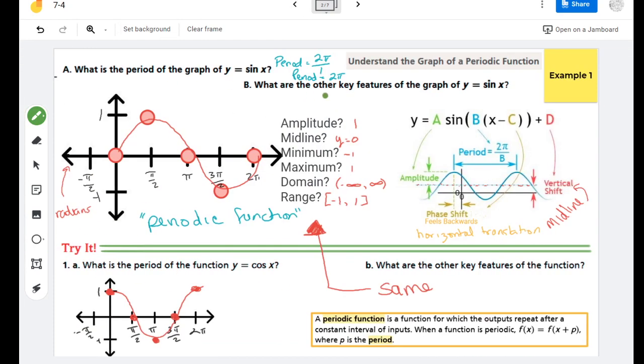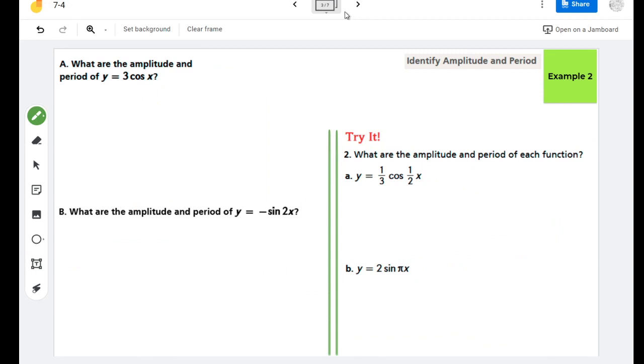So recall the amplitude is the distance from a midline to the top or the bottom of the graph. An amplitude is a physical distance, something that's measurable, so when we find an amplitude, we take the number that's being multiplied to our trig function, in this case it's 3, and I make sure to take the absolute value of it so that I always get a positive number. So the amplitude of this function is 3.